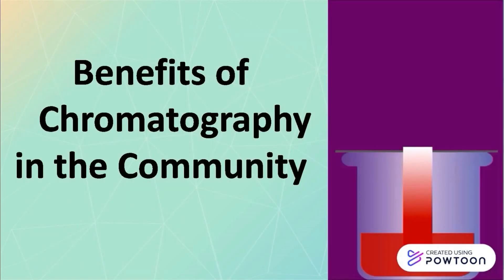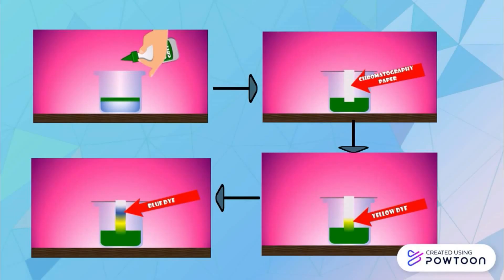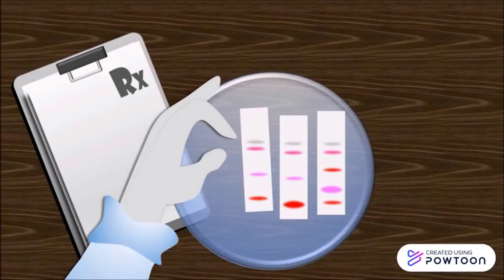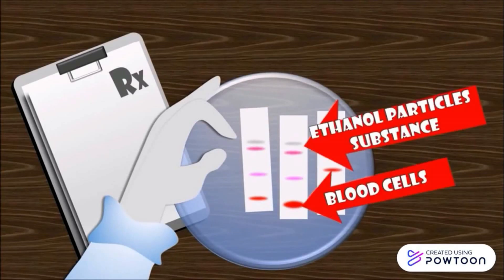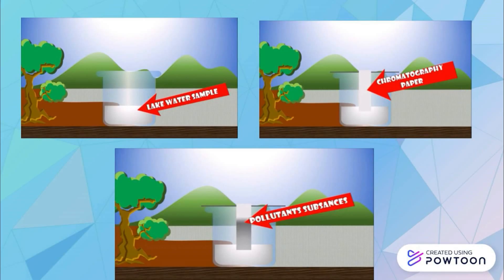Benefits of chromatography in the community. Using chromatography paper, ink or dyes can be separated from a liquid. The dyes spread on the paper as it absorbs the color mix from the liquid. It is usually used in hospitals to determine if a certain person has ingested alcohol. It is also used in environmental agencies to determine the level of pollutants present in bodies of water.